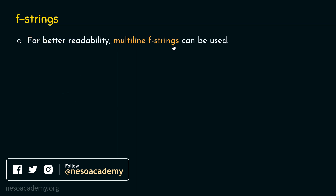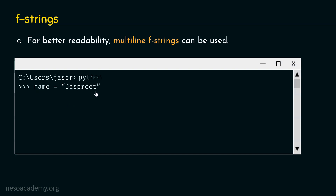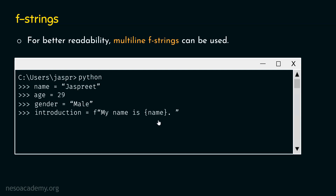For better readability, multiline f-strings can be used. Let's open the command prompt and type name equal to Jaspreet, then age equal to 29 — note that age is an integer, not a string. Now let's type introduction equal to f, my name is name. At runtime, name will be replaced by Jaspreet because the name variable is pointing to the string Jaspreet, and within curly braces this object will be substituted.